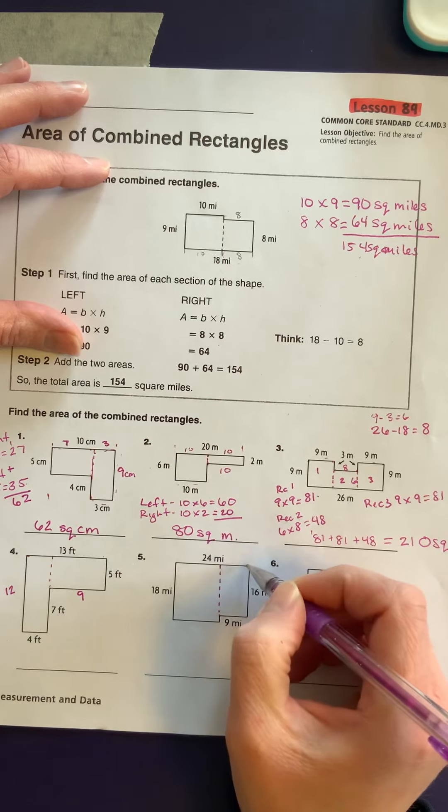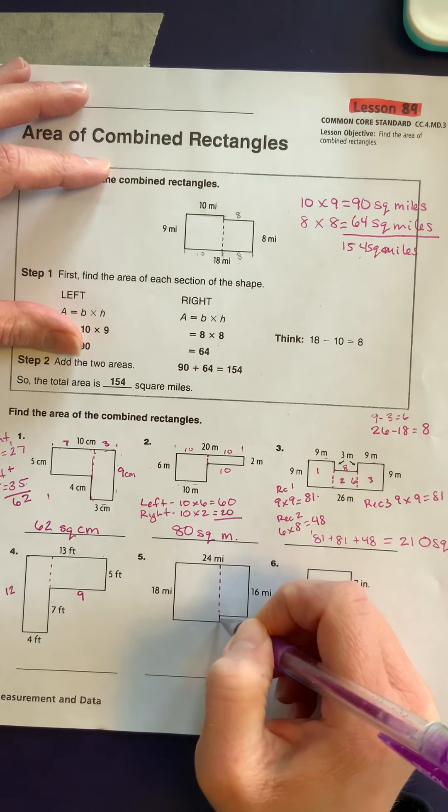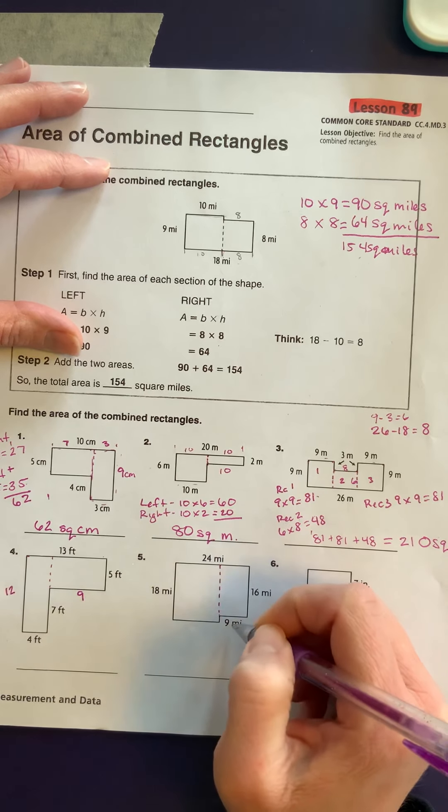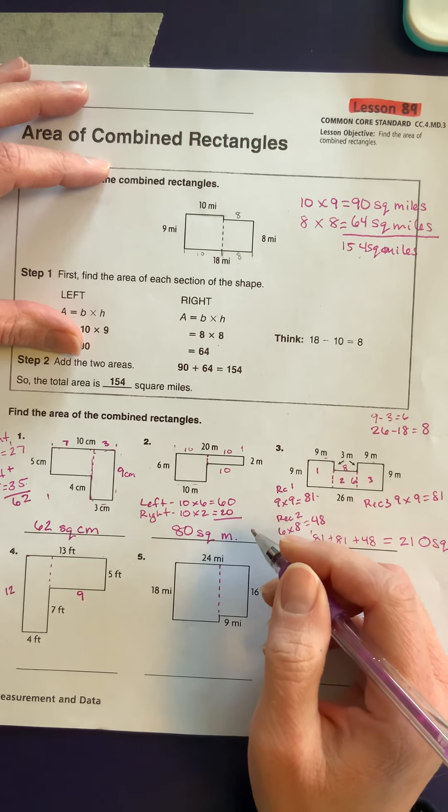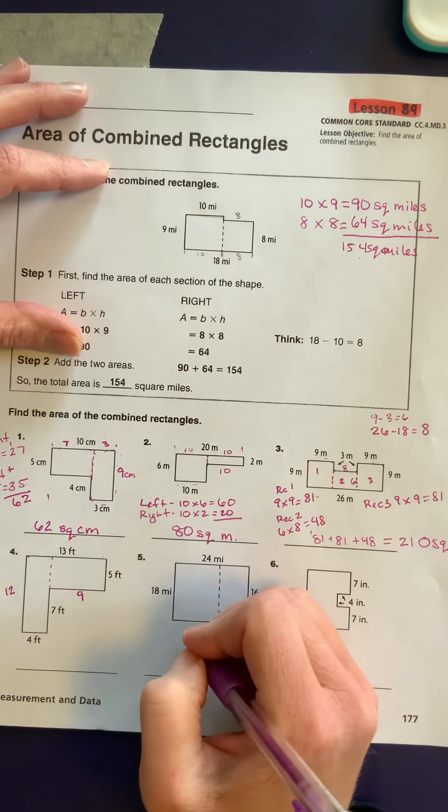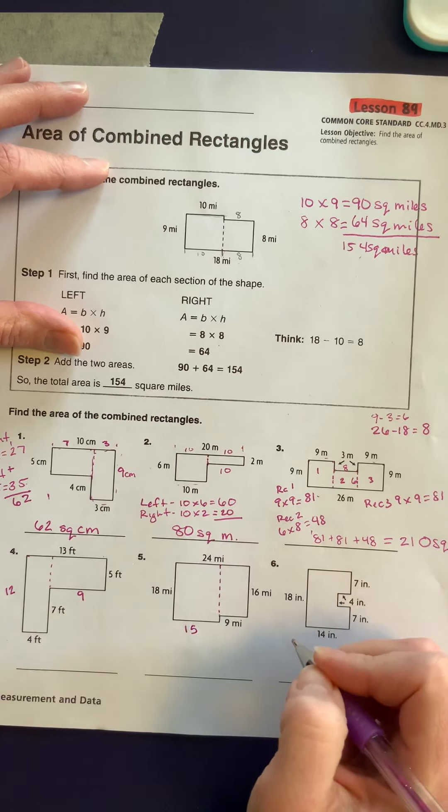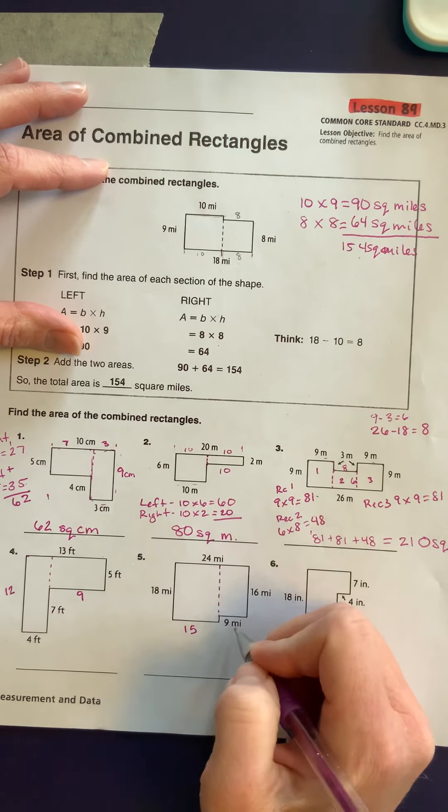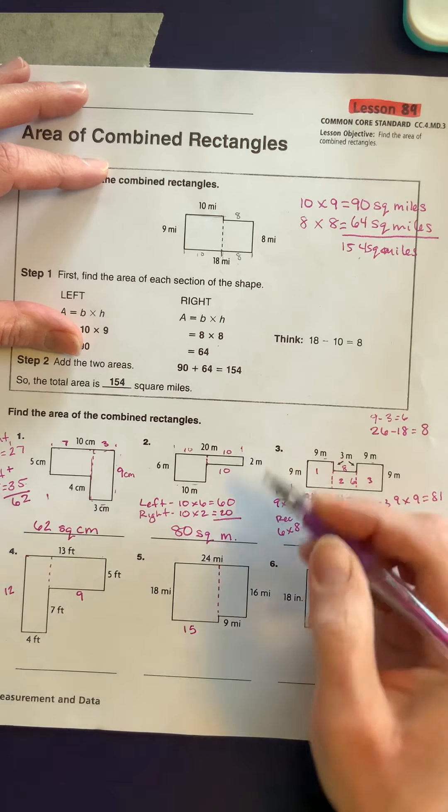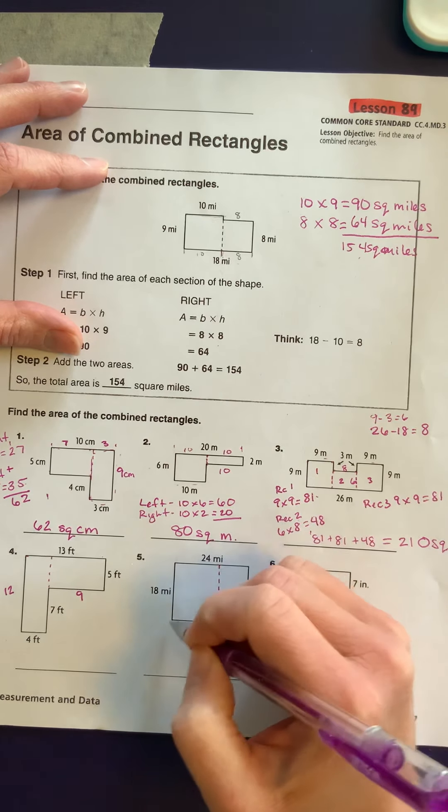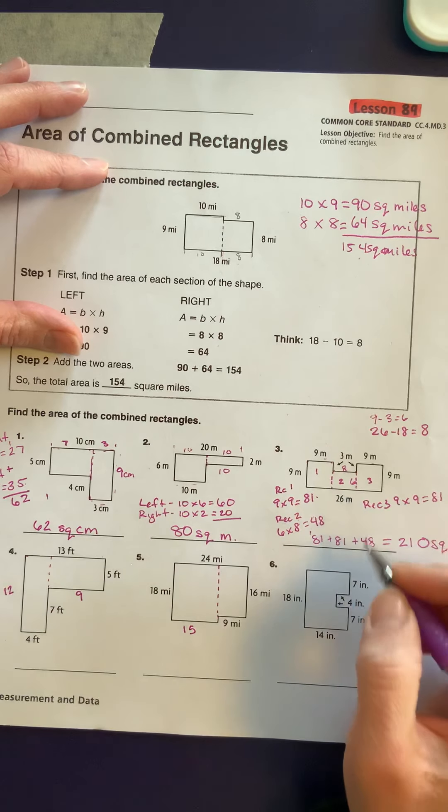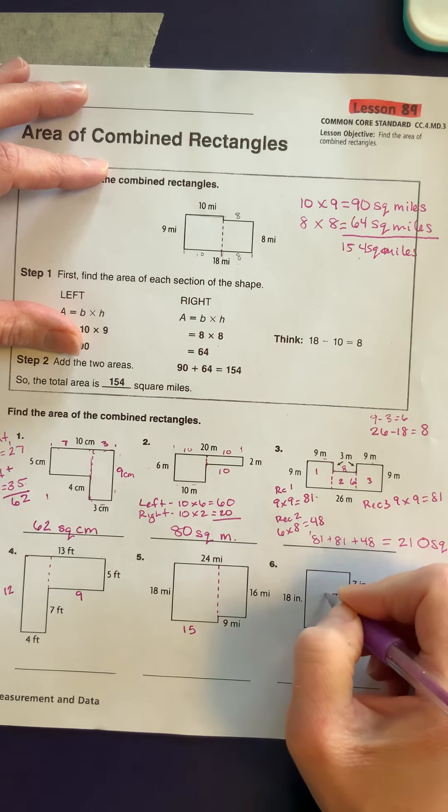So if it's 24 miles all the way across and this part is 9, 24 minus 9 is going to give me 15 because if I add 15 plus 9 I get 24. So 9 times 16 gives me this square. 15 times 18 gives me this square. And we're going to break this one apart into 3 again.